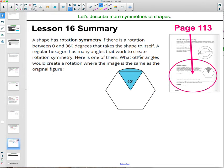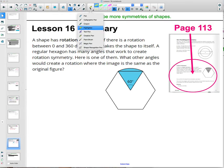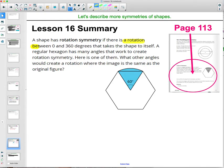So take a look at the bottom of page 113 in this summary. We see that they have given us the definition again of rotation symmetry. So remember that there's rotation symmetry if there is a rotation between 0 and 360 degrees that takes the shape onto itself. So then they've given you a regular hexagon. It has many angles that work to create rotation symmetry. Here's one of them. So 60 degrees. So if we rotate it 60 degrees clockwise or counterclockwise depending on which way you want to go, it will rotate back on itself. So if we follow it this way, that's going to rotate back on itself. Are there more? So what other ones are there?